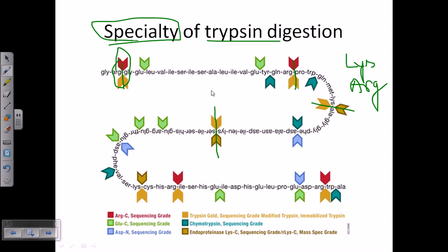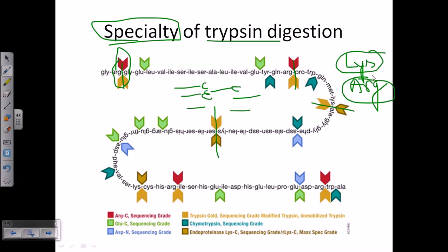Why use a specific cleavage rather than random? By choosing trypsin, we ensure that whatever small fragment we get, at the C-terminal of all those fragments there must be lysine or arginine — no other amino acid. So whatever short polypeptide segment we get, its endpoint will be either lysine or arginine. This gives us the idea of where in the protein sequence lysine and arginine are found. That is the key advantage of using trypsin.